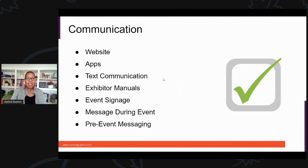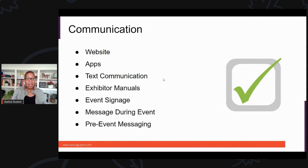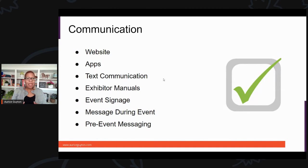First of all, your communication plan needs to be on your website. How are you communicating your COVID protocols? If you have to wear a mask or show a vaccination card, whatever your requirements are, lay them out on your website. If you have apps, there are a lot of event apps out there — definitely put that information there. Also, text communication — you can let attendees know via text message what your COVID plan is.